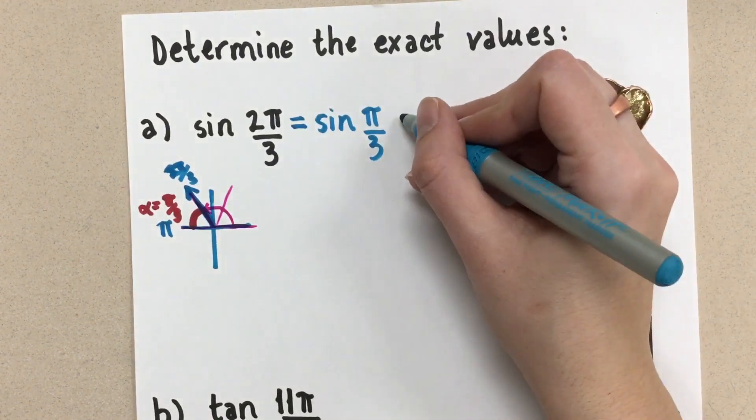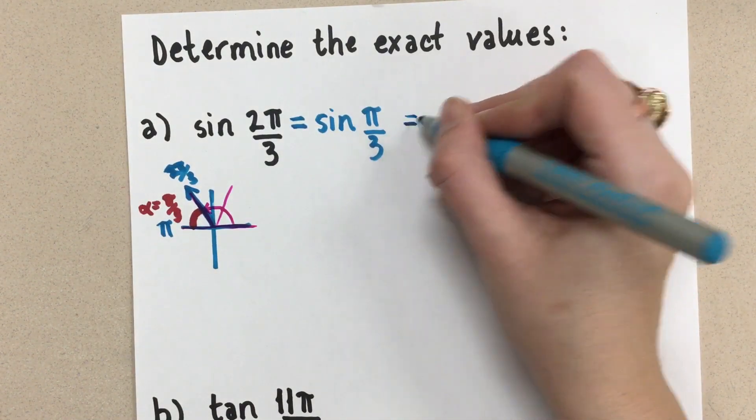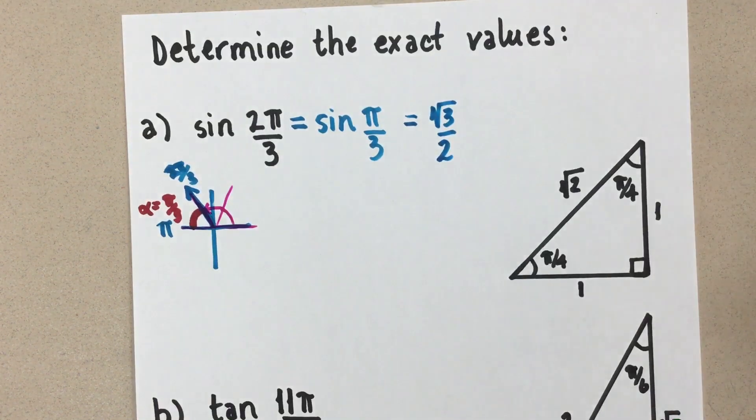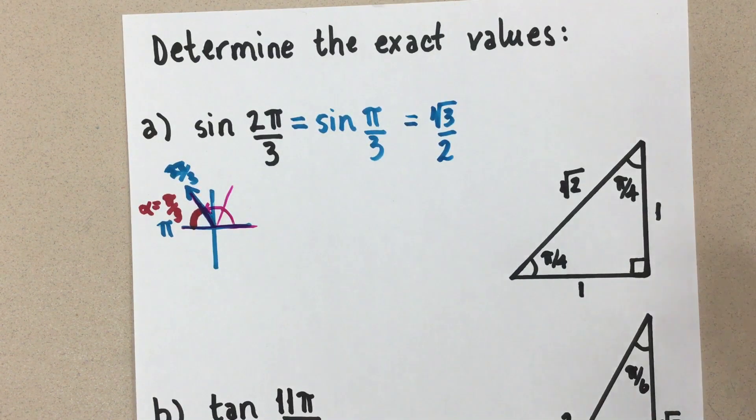So sine of this angle is opposite over hypotenuse, root 3 over 2. And there's my exact value for sine of π over 3, root 3 over 2. We get that directly from the special triangle.